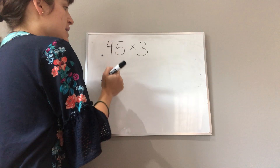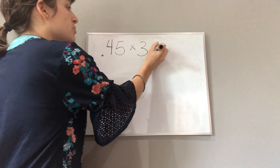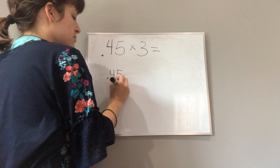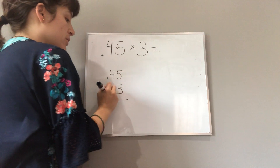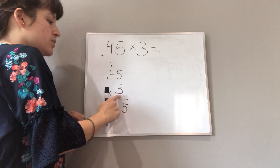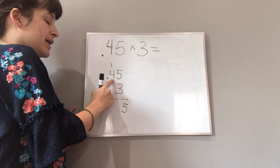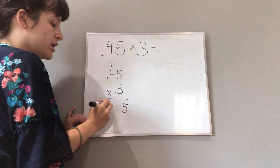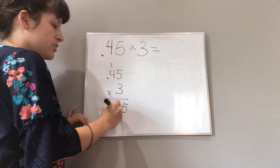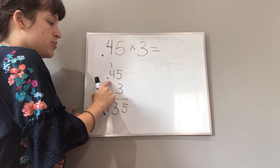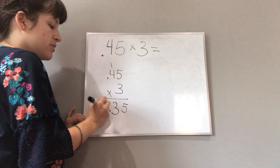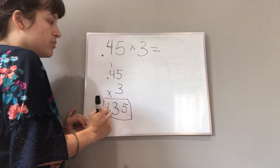I'm going to multiply this out like I would normally multiply something. So .45 times 3: 3 times 5 is 15; 3 times 4 is 12, plus 1 is 13. There are two decimal places in my problem, so there will be two decimal places in my answer. I get 1.35.